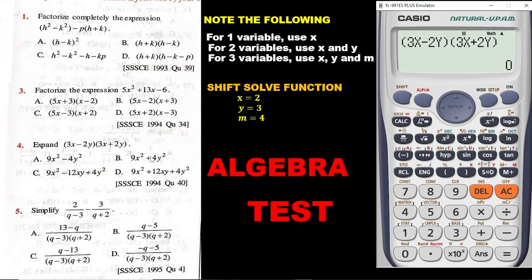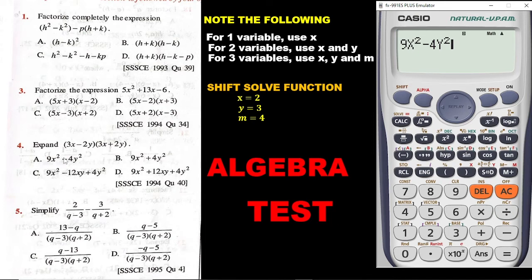The question is: which of these options, when you put X equal to 2 and Y equal to 3, will give you 0? Let's enter the options one by one. The first one: 9X squared — alpha X squared — then minus 4Y squared: 4, alpha Y, then press square. That is option A. Press solve, put 2 in place of X, press equals; put 3 in place of Y, press equals. We are getting 0, so it means the correct answer is A.